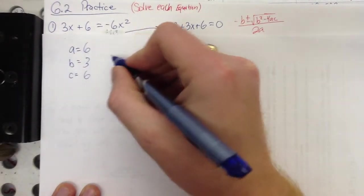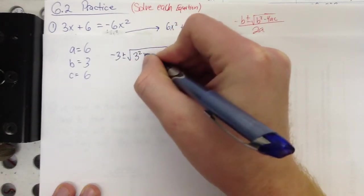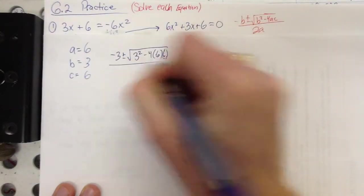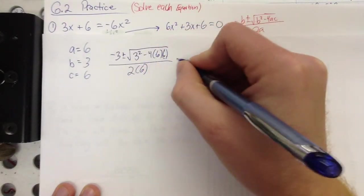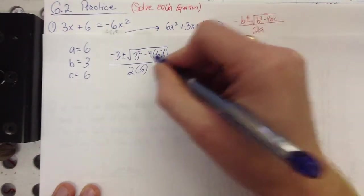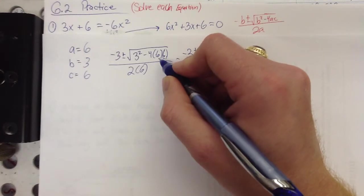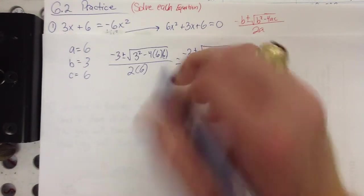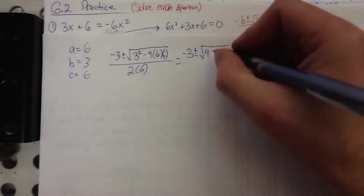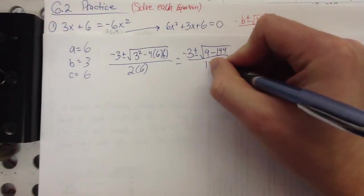Alright, so, negative b, in this case negative 3, plus or minus the square root, b squared minus 4 times 6 times 6 again, that's a and c, all over 2 times 6. Alright, simplify what we can. Still under square root, 3 squared is 9. 4 times 6 is 24, times 6 again, I'm going to cheat. 24 times 6 is 144. And 12 on the bottom.